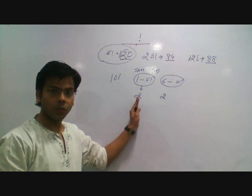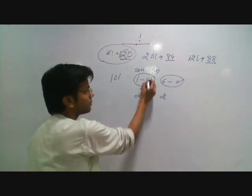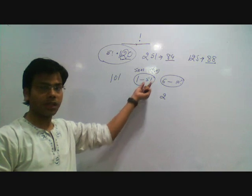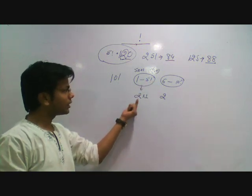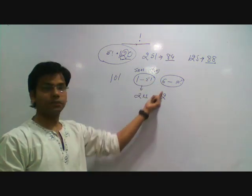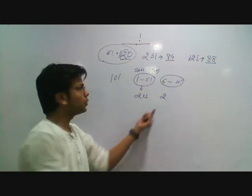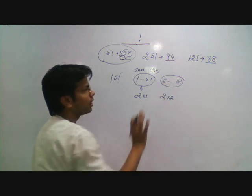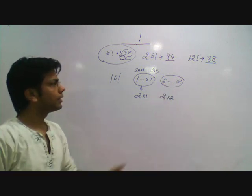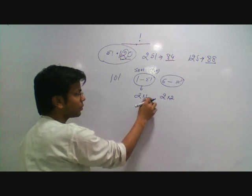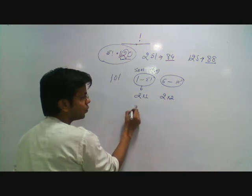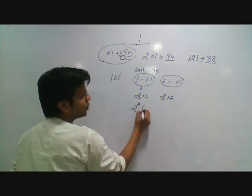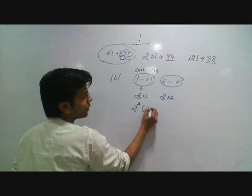So this bundle has a 2, and this is a multiple. The first bundle ends with 2 into 1, and the second ends with 2 into 2. So these 2 bundles together end with this. If we take out 2 as common, we have 2 into 1 into 2.